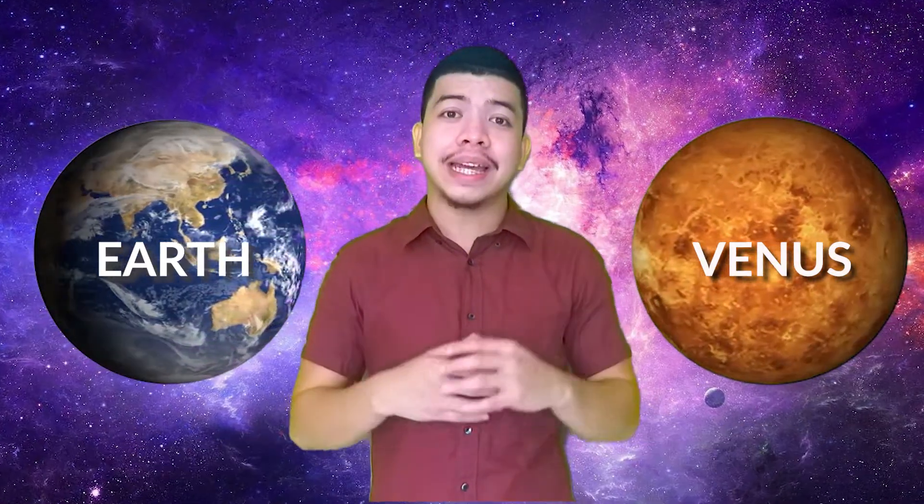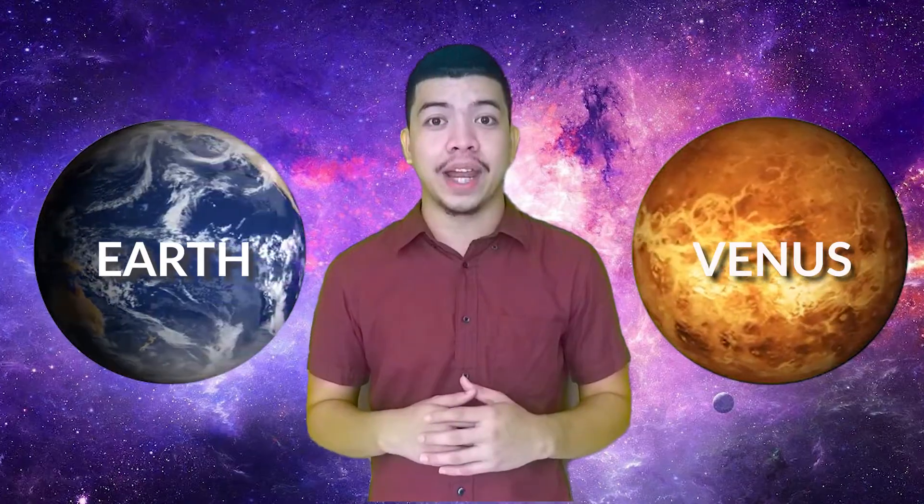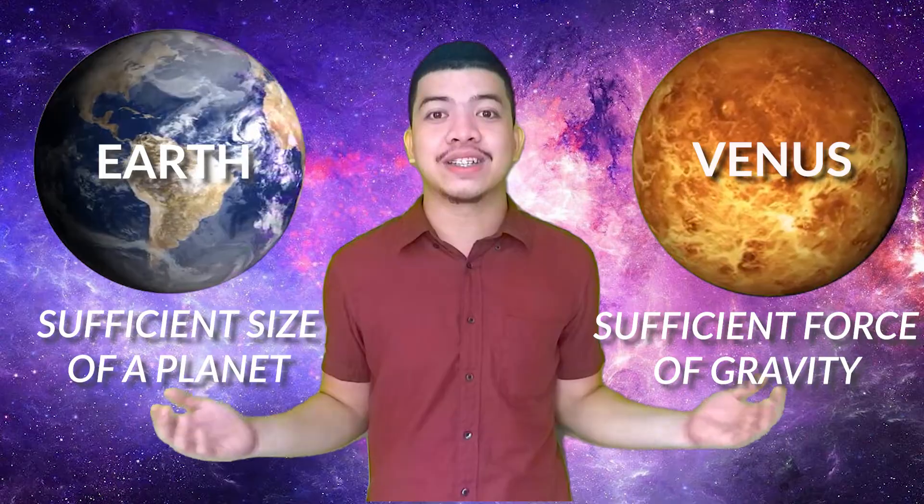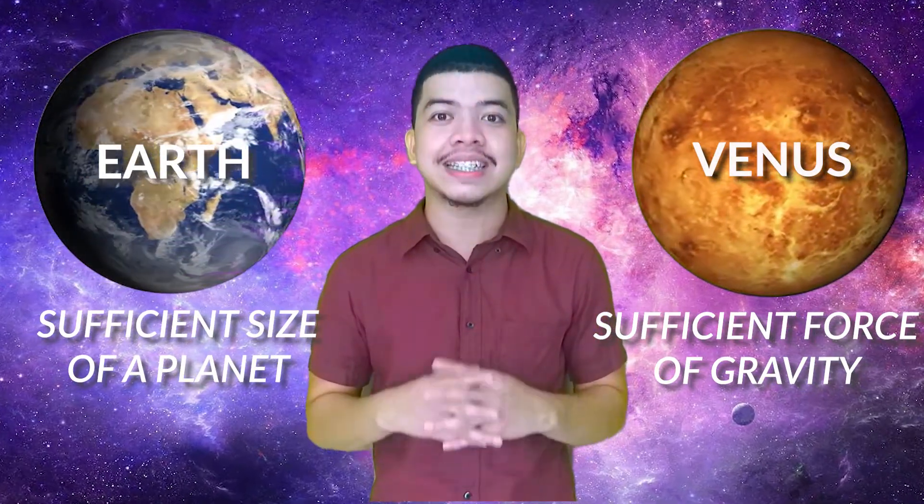For your information, sina Earth at Venus lamang ang may tamang size sa buong solar system. What can we conclude from here? Sufficient size equals sufficient gravity. At dahil sufficient ang kanilang gravity, they also have sufficient atmosphere.